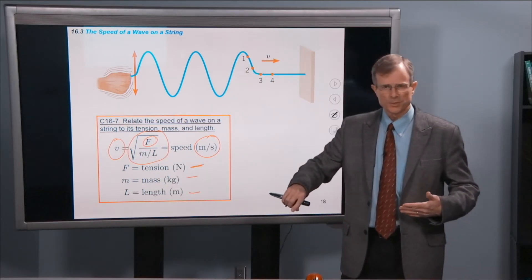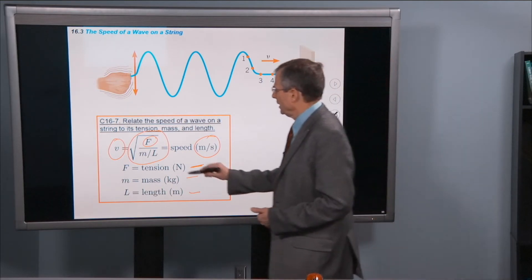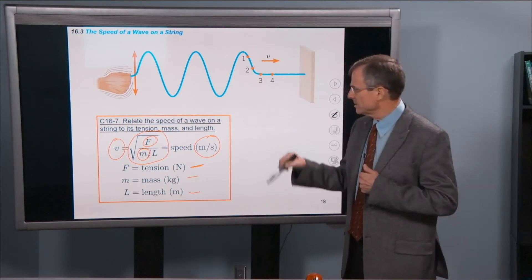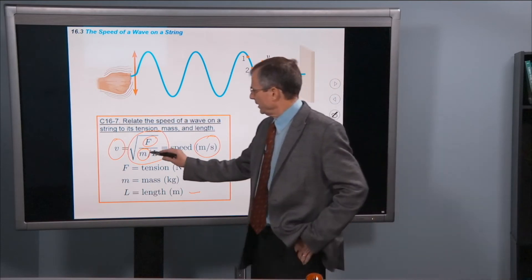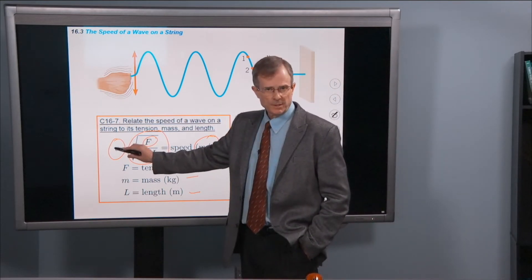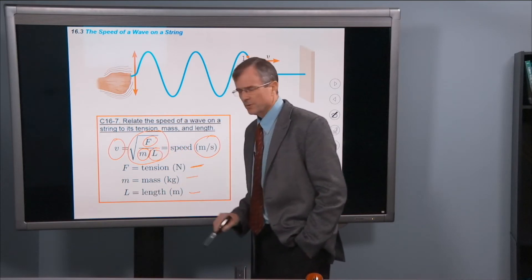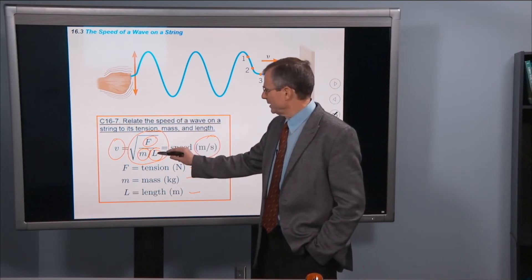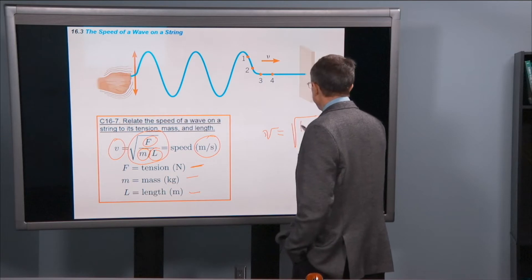What if you increase the mass of a string? You should think that that would have the opposite effect. If you increase the mass of the string, that mass is in the denominator and increasing the mass will decrease the speed. And then what about the length of the string? Well, that's in the denominator of the denominator.